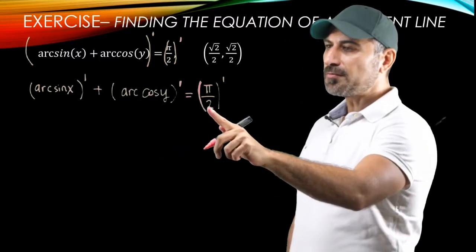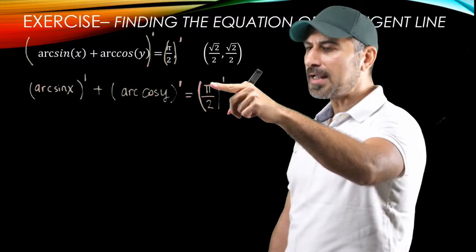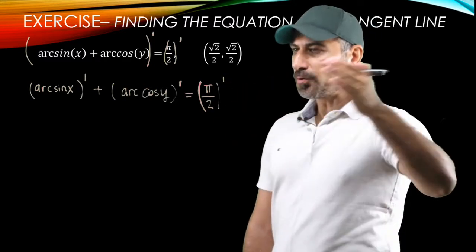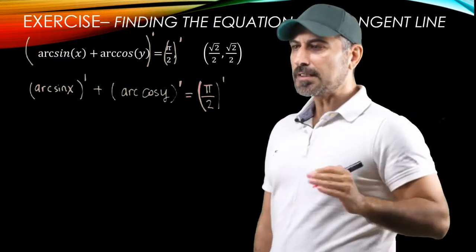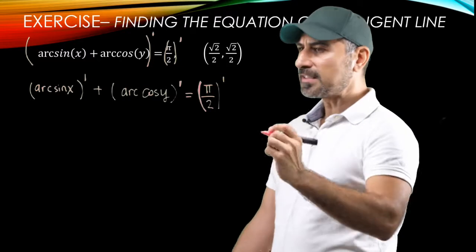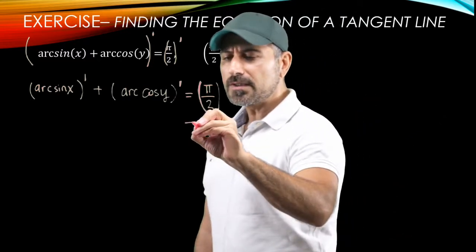And the derivative of the right-hand side is a derivative of a constant because pi is a constant, which is 3.14 and with all the decimal places. And divided by two, that's another constant. So this is going to be equal to zero.